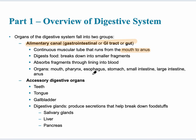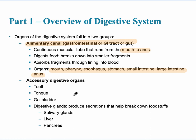The alimentary canal consists of these organs: the mouth, pharynx, esophagus, stomach, small intestine, large intestine, and then finally the anus. The other part of the digestive system is made up of accessory digestive organs.